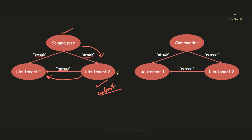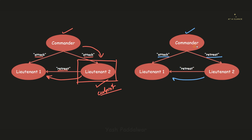Because of this traitor node, the system may fail. In another case, the commander sends a message to lieutenant 1 to attack and to lieutenant 2 to retreat. Lieutenant 2 sends the message of retreat to lieutenant 1, which aligns with what the commander said. So lieutenant 2 is not the culprit here. However, the commander is saying two different messages to both lieutenants, which makes the commander the culprit. Again, there are high chances the system may fail. These are the two cases considering three nodes in the Byzantine problem.